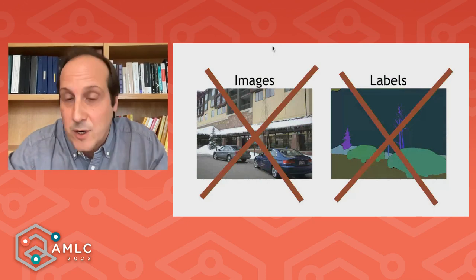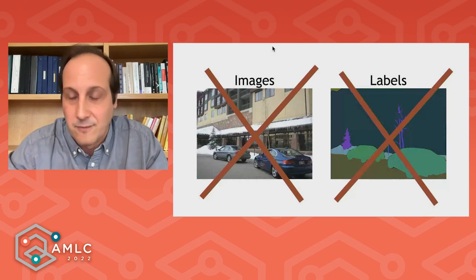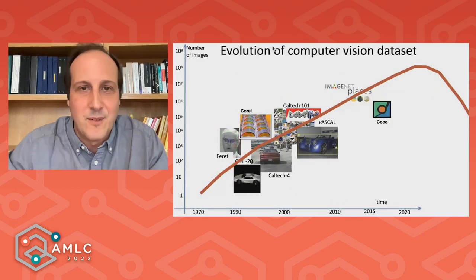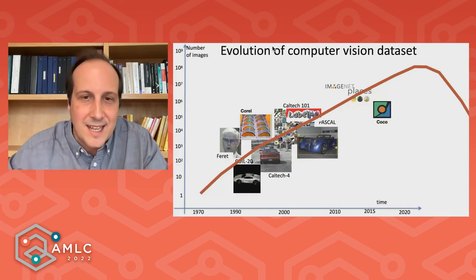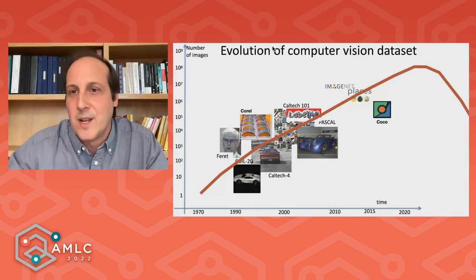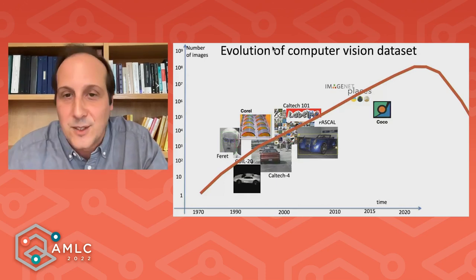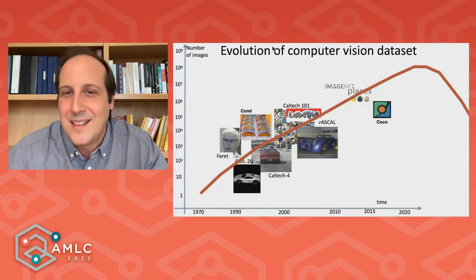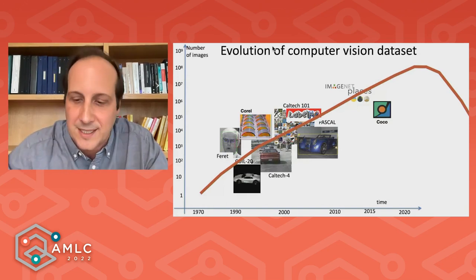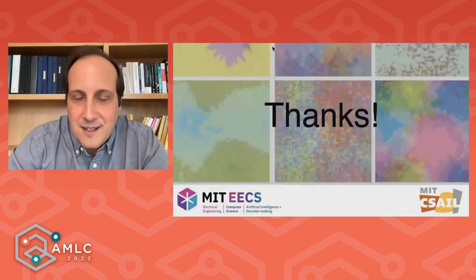Our goal is to get rid of images and labels in order to train visual systems. We hope that the evolution of computer vision datasets — which has always been moving toward larger and larger datasets — will now also develop another trend: looking into smaller and smaller synthetic datasets capable of reproducing the performance of real datasets. With that, I will stop here. Thank you for your attention.